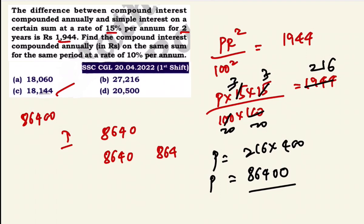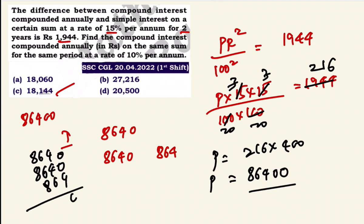Adding both years' interest for confirmation: 8,640 + 864 + 864 + 86.4, giving the total compound interest. Using the 2-year formula for verification.